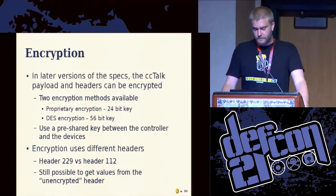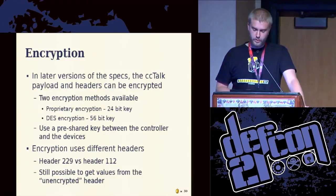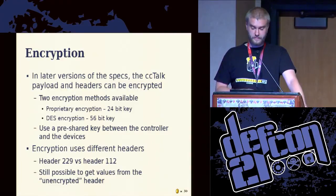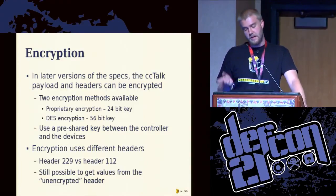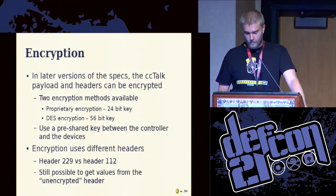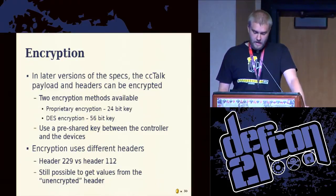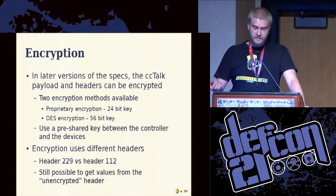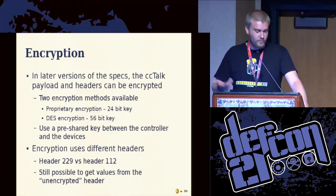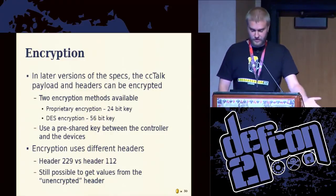There is also encryption. There are two encryption methods used: one is proprietary with a 24-bit key, the other is DES encryption. They use a pre-shared key between the controller and the device. But the problem is that it's a different header, so you can still request the device using the unencrypted headers — even while the machine is in use with the encrypted one.